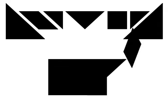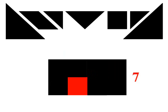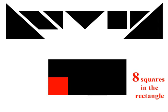Let's make a big rectangle using all 7 shapes. Let's start with the square and see what fractional part it is of the rectangle. Counting the squares: 1, 2, 3, 4, 5, 6, 7, 8. There are 8 squares in this rectangle, so the square is 1 eighth the rectangle.